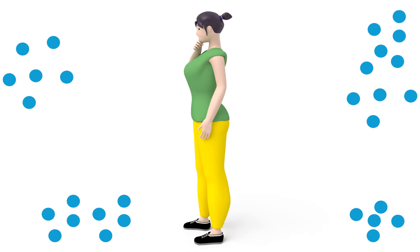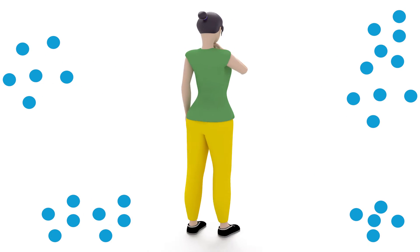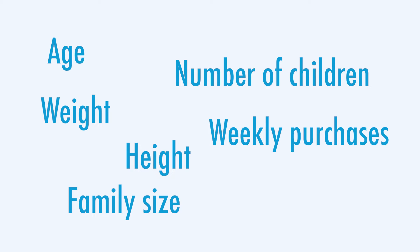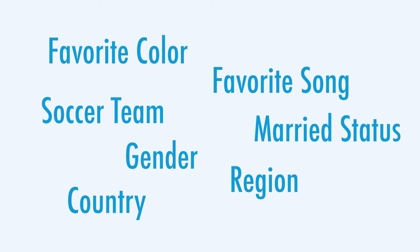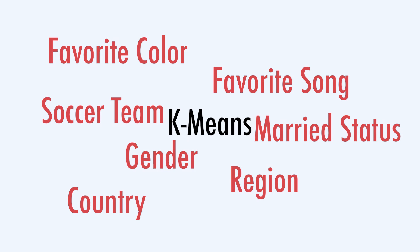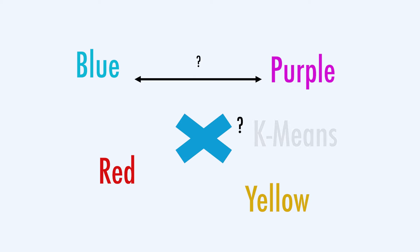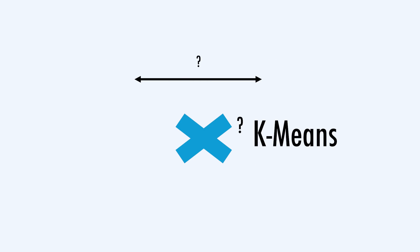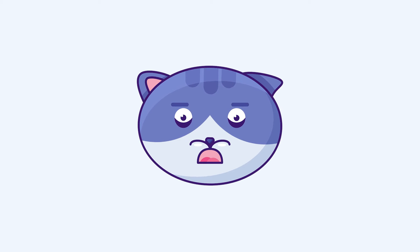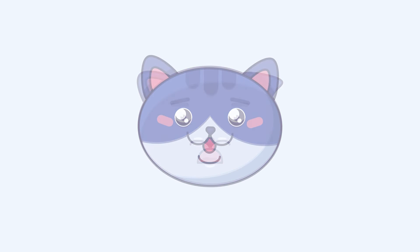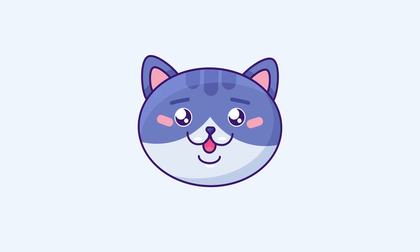Often, we find ourselves having to cluster data that contains both numerical features and categorical features. Standard clustering algorithms such as k-means do not work with categorical data by default. Computing the Euclidean distance and the means in the k-means algorithm doesn't go well with categorical data. And as you might already guess, there is not a standard approach to address this problem. There are, however, a few practical approaches to this limitation. We will discuss some of them in this video.